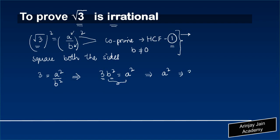Now we use the theorem that if a prime number divides some number x square, then that prime also divides x. Here, 3 actually divides a square, which means that a is also divisible by 3.